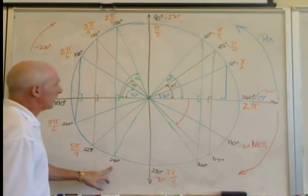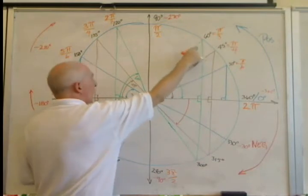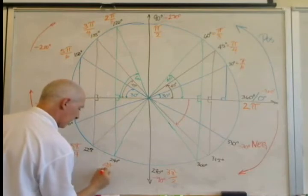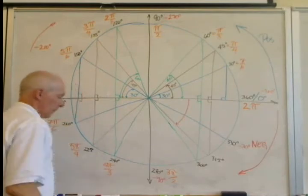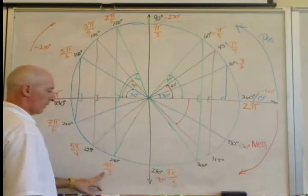240 degrees, we can do it either way. Let's do it with the 60 degrees, that's a little easier. Well, that's 4 of these, 4 pi over 3. It's also 8 pi over 6, because it would be 8 of those, which would reduce to 4 pi over 3.